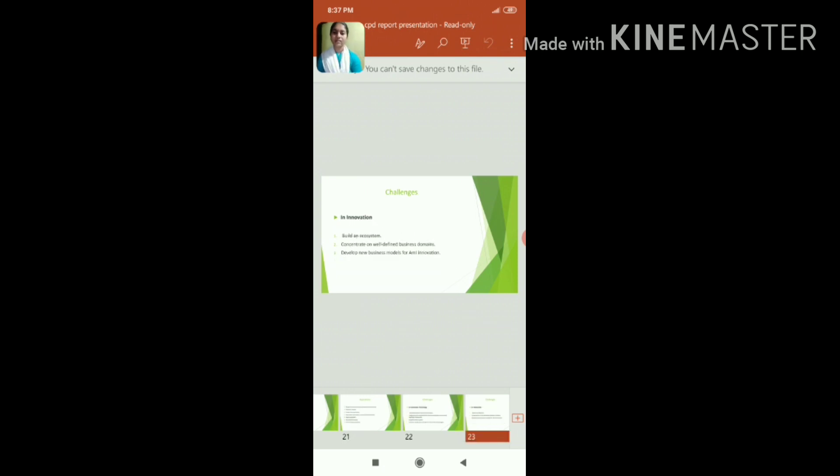The second main challenge is in innovation. The challenge is to build an ecosystem, concentrate on well-defined business domains, and develop new business models for ambient intelligence innovation.